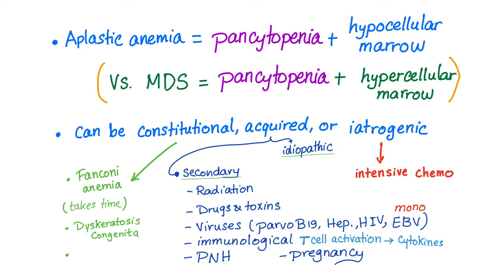What are the causes of aplastic anemia — aplastic pancytopenia, if you will? Constitutional, acquired, or iatrogenic. Constitutional, meaning congenital or inherited: Fanconi anemia. There is a huge difference between Fanconi anemia and Fanconi syndrome. Fanconi anemia is failure of bone marrow stem cells. Fanconi syndrome is failure of your proximal convoluted tubule of the kidney. Also, other causes include dyskeratosis congenita.